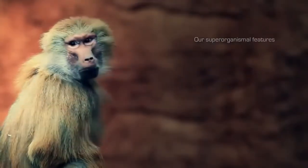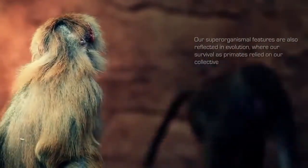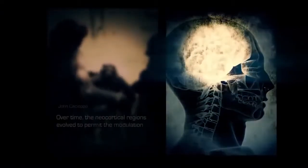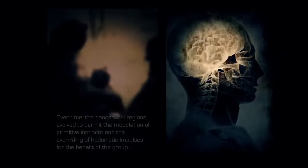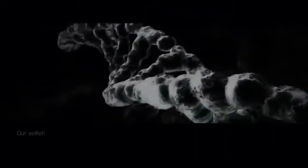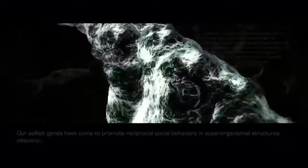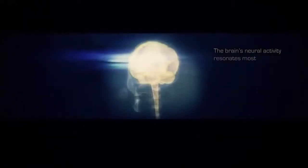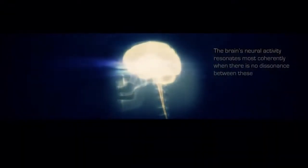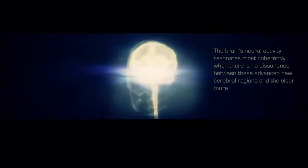Our super-organismal features are also reflected in evolution, where our survival as primates relied on our collective abilities. Over time, the neocortical regions evolved to permit the modulation of primitive instincts and the overriding of hedonistic impulses for the benefit of the group. Our selfish genes have come to promote reciprocal social behaviors in super-organismal structures, effectively discarding the notion of survival of the fittest.